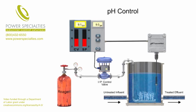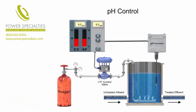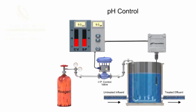Reaching the setpoint, the carbon dioxide flow is minimized and the process is continually monitored for variation. The effluent is the treated water that is discharged out of the tank. The process continues to provide the lime-softened water at the desired pH level.